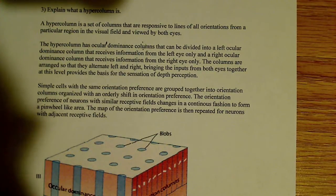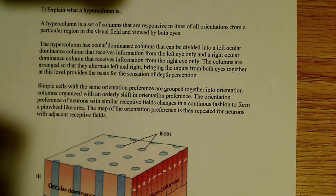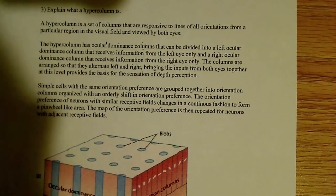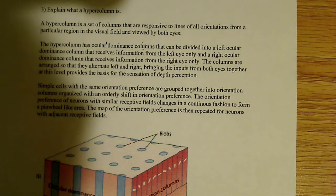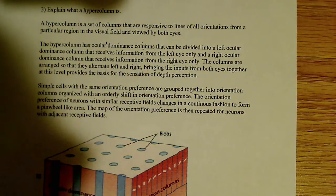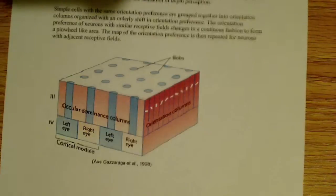that can be divided into a left ocular dominance column that receives information from the left eye only, and a right ocular dominance column which receives information from the right eye only. The columns are arranged so that they alternate between left and right, and I want to show that real quick before I go on.